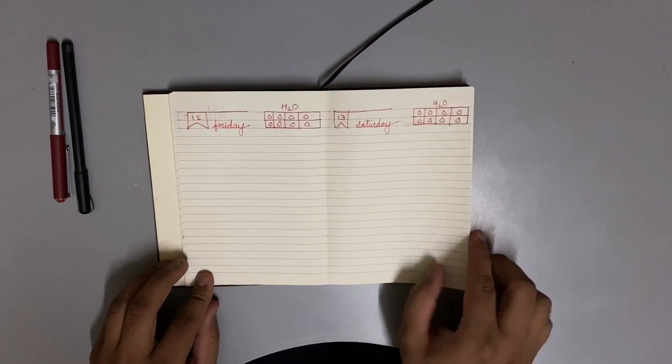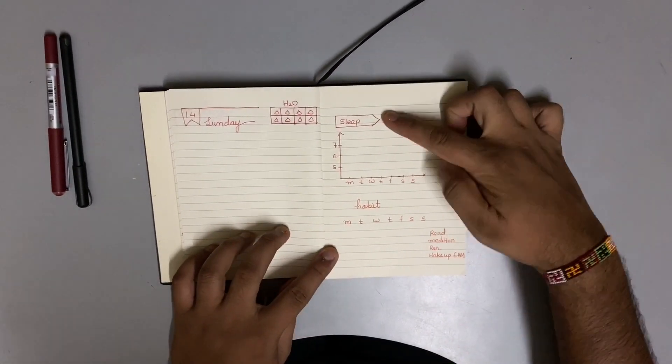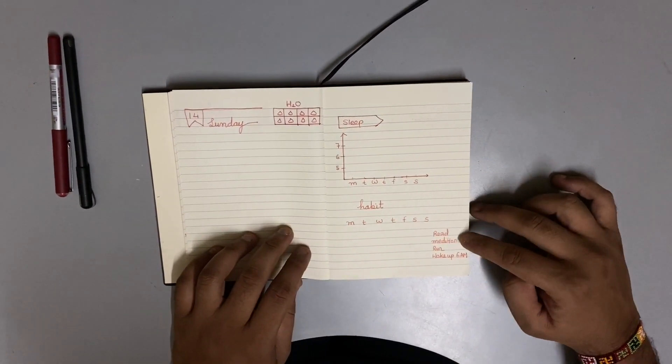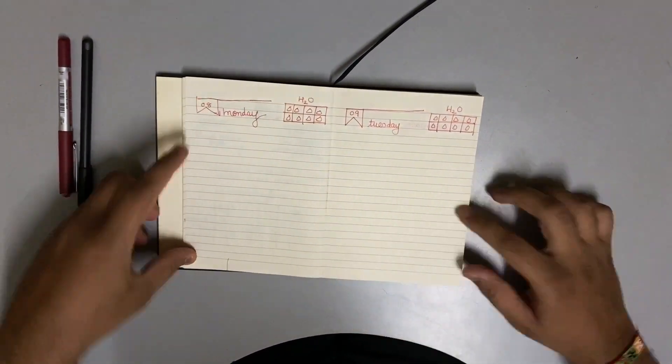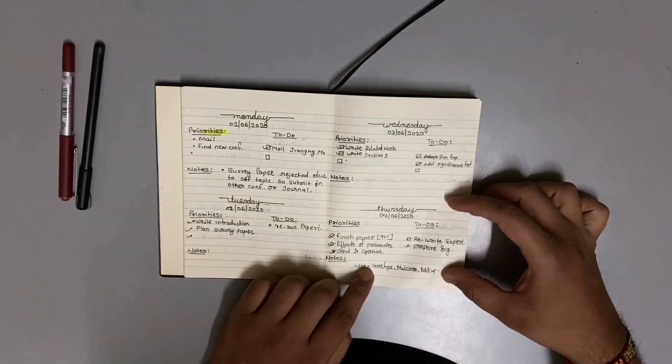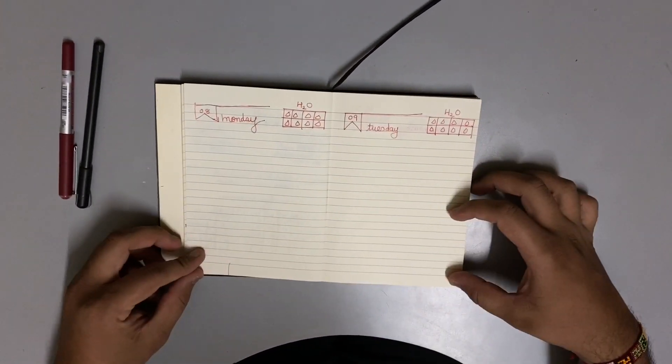So my planner is ready and let's have a look at it. Over here I am going to track my sleep, over here my habits, and each day I will track my water and then notes. Compared to last week it looks very nice.